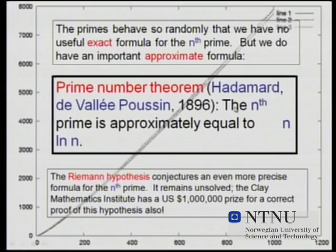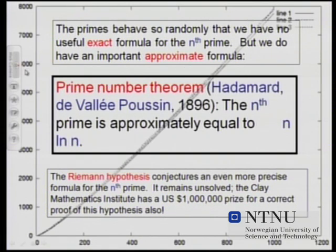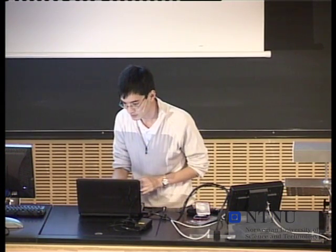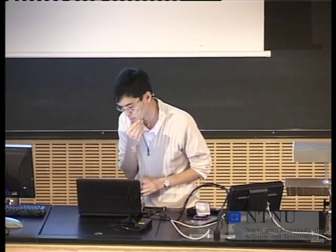The graphic in the background: the horizontal axis is n and the vertical axis is the nth prime. So at n equals 1,000, the nth prime is something like 7,000-something. The dotted line at the top is the graph of the nth prime, and the solid line at the bottom is the graph of n log n. You can see there's a reasonably close fit, and as n increases to infinity the fit actually gets better, at least proportionally.